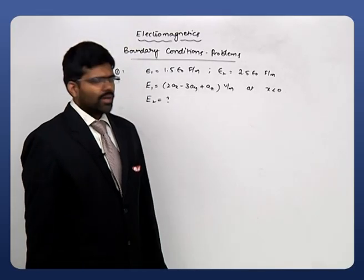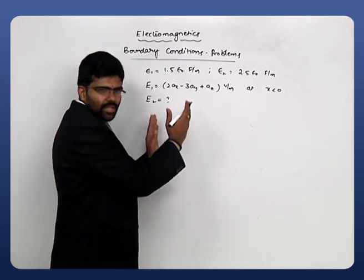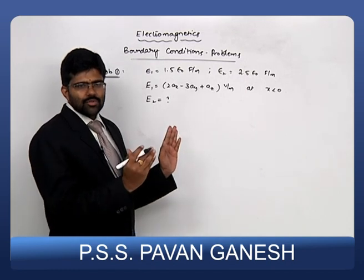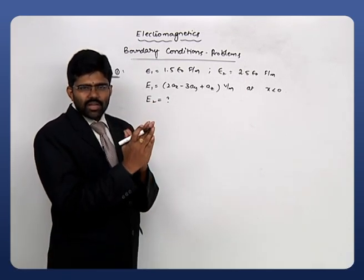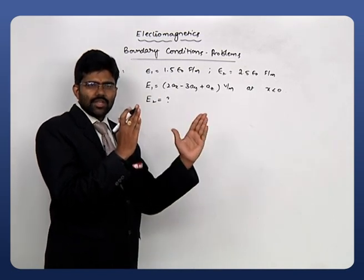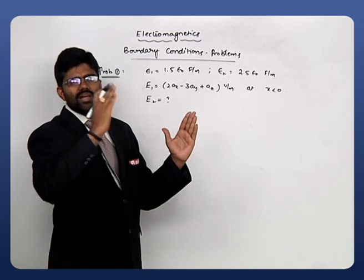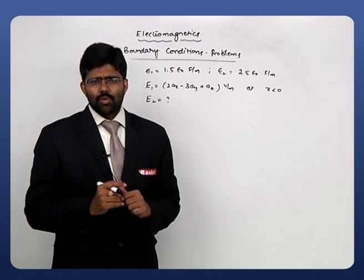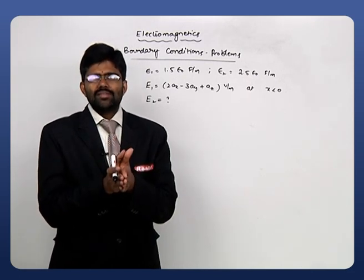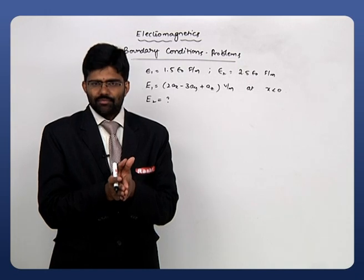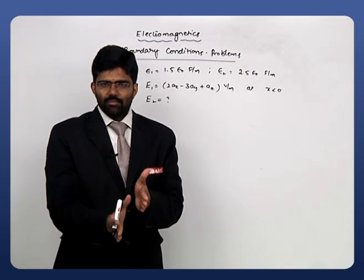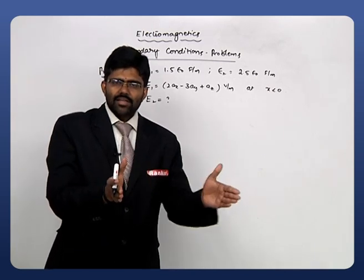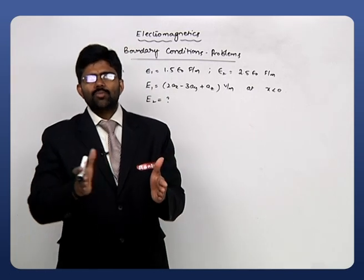Observe the data given: the boundary is at x=0. We apply the boundary condition here. For x<0 we have the given electric field; for x>0 we need to obtain the electric field. The x=0 boundary indicates the yz plane. Less than zero is the negative x-axis and greater than zero is the positive x-axis.